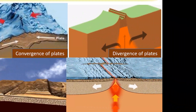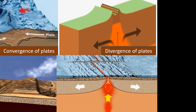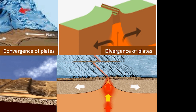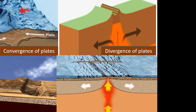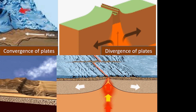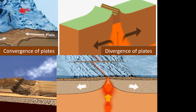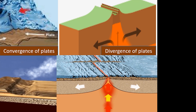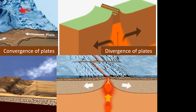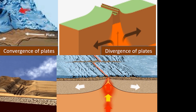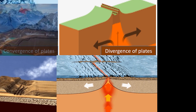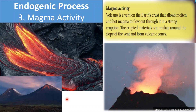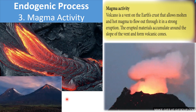A divergent boundary occurs when two tectonic plates move away from each other. Along these boundaries, earthquakes are common and magma rises from the Earth's mantle to the surface, solidifying to create new crust.